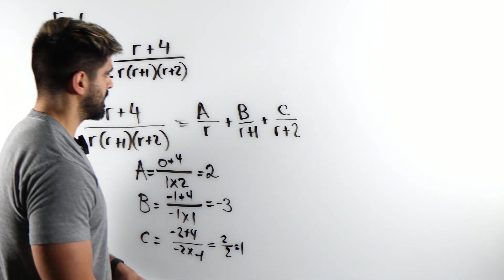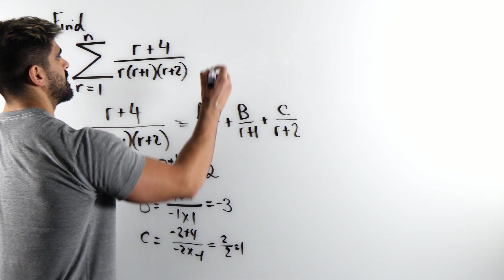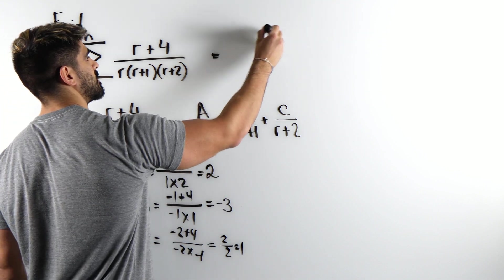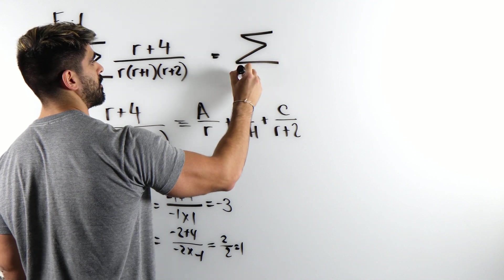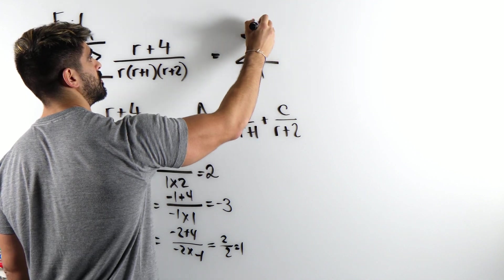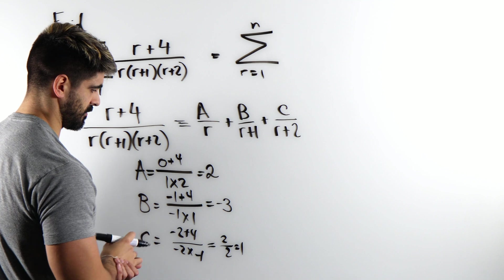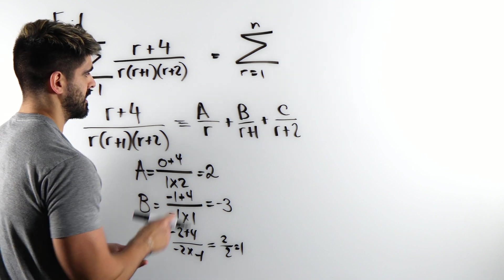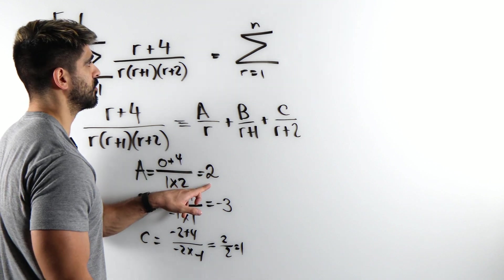So what is our sum going to be? This is going to be the sum from r equals 1 to n of which one should we do first? Doesn't really matter, I guess. I think it's just better to just write this one first.